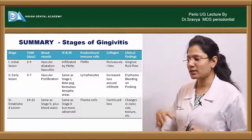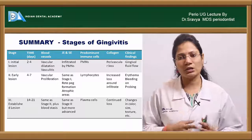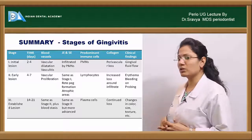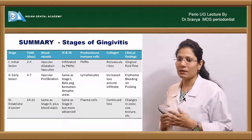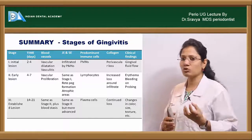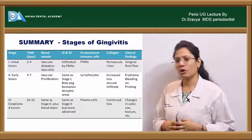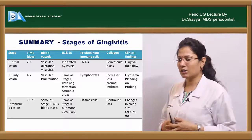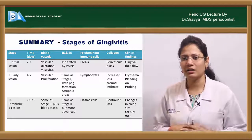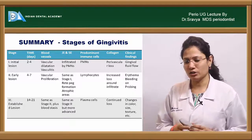To summarize the stages of gingivitis: in the initial stage (2–4 days of plaque accumulation), blood vessels are dilated with vasculitis, and the predominant immune cells are polymorphonuclear neutrophils (PMNs). There is perivascular breakdown of collagen. There are no clinical findings other than an increase in gingival crevicular fluid flow — hence it is called the subclinical stage of gingivitis.